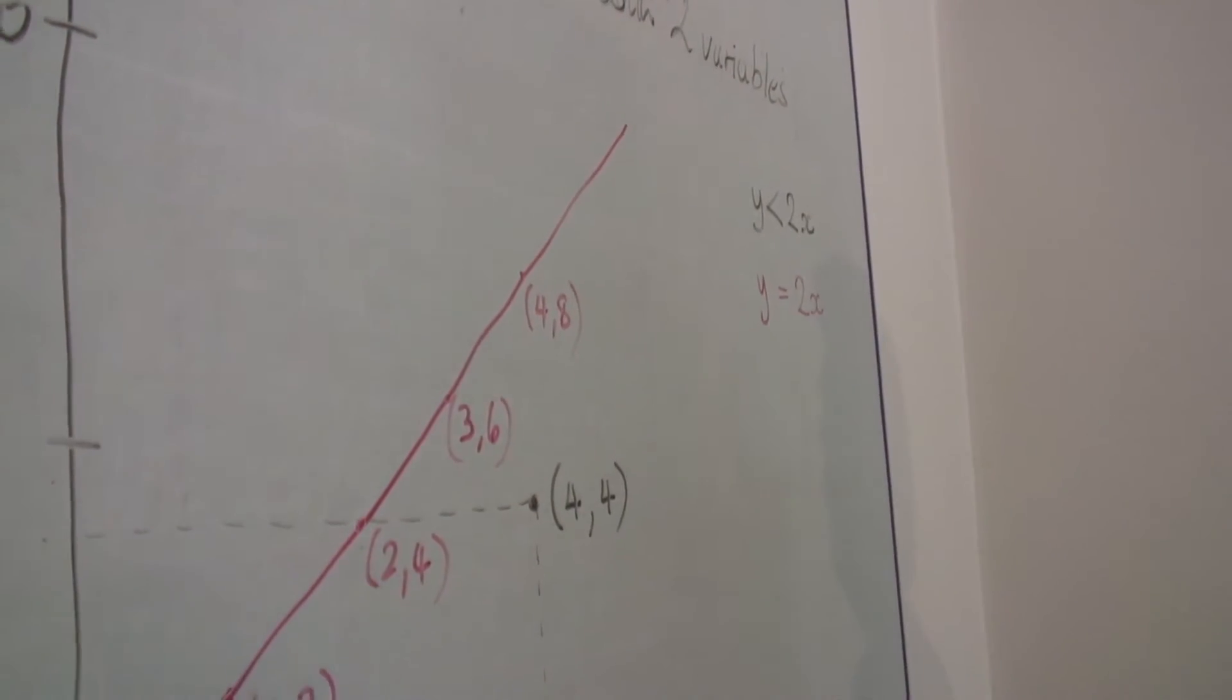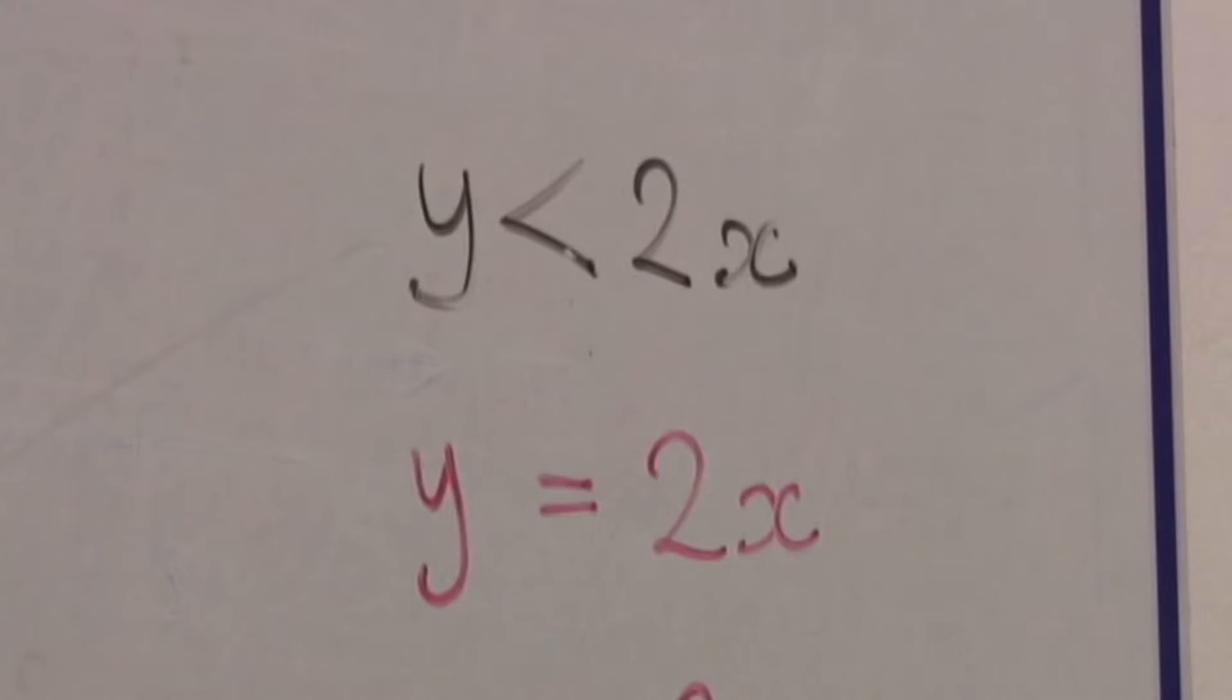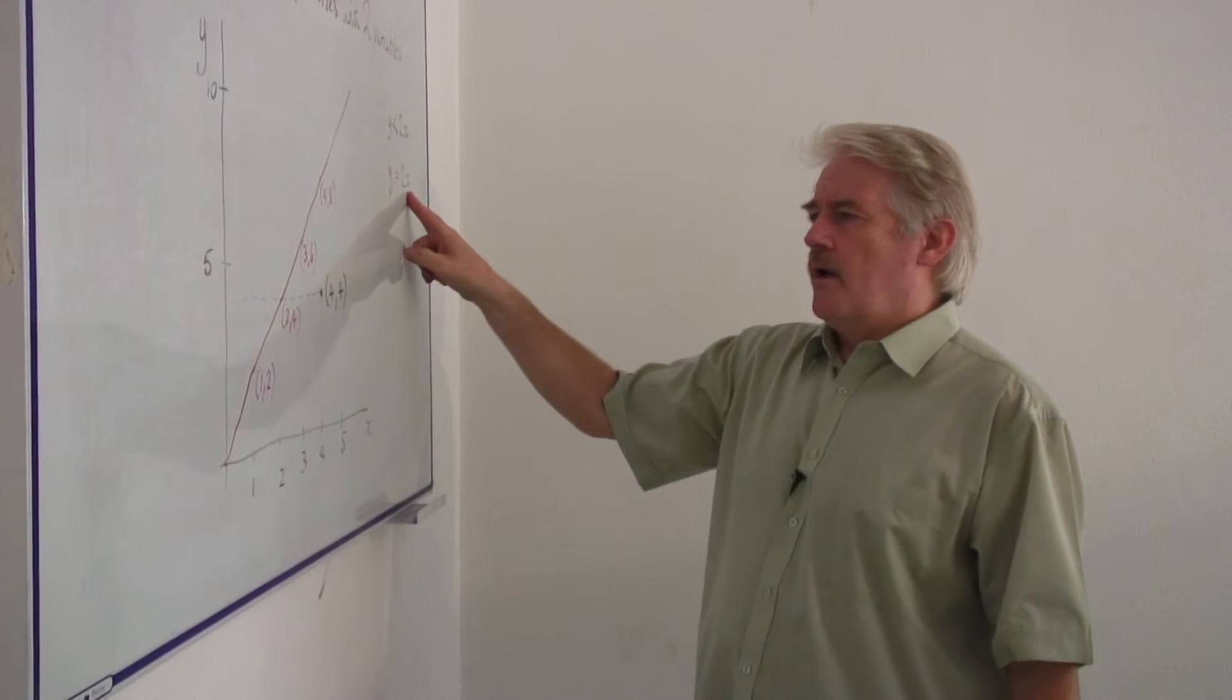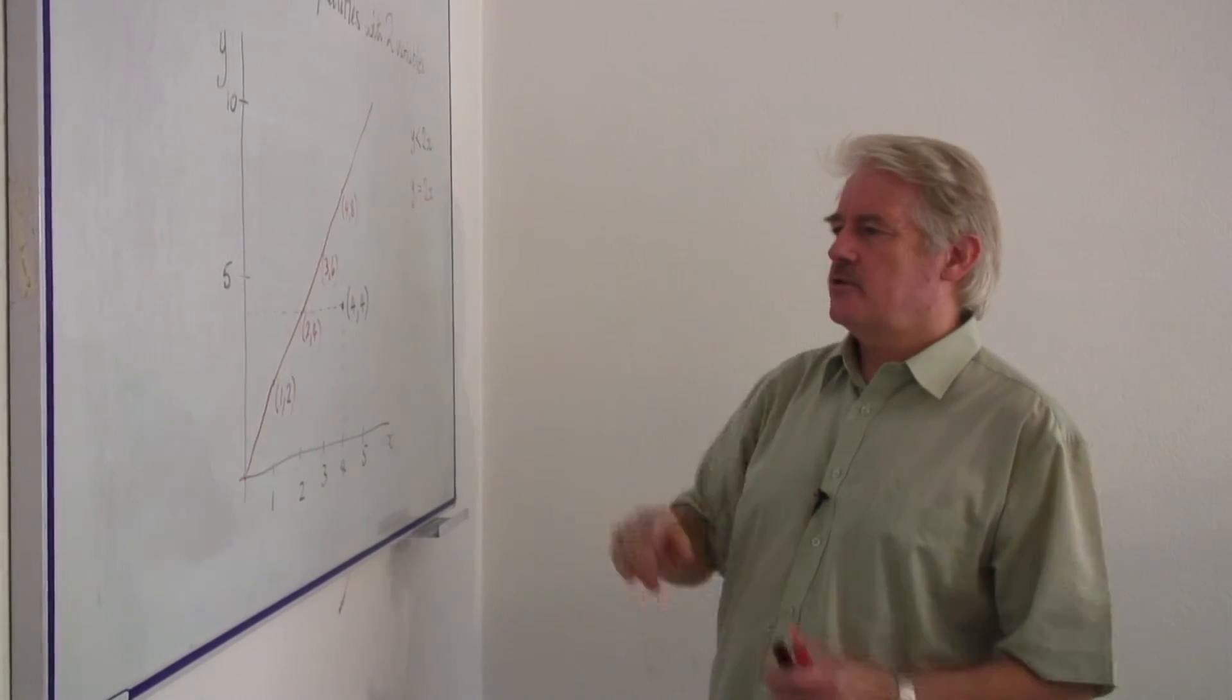Now it is very clear from that, this is a straight line. So y is equal to two x is a straight line. Now, where is y less than two x?